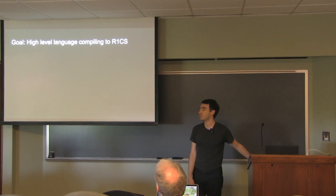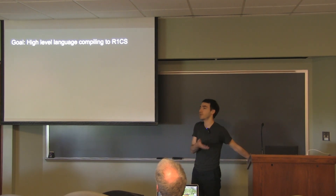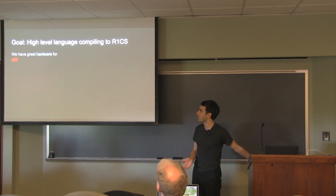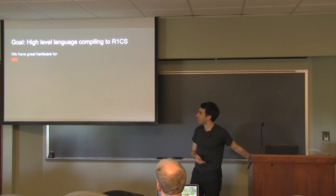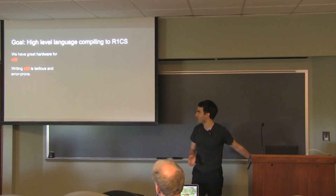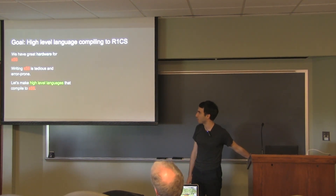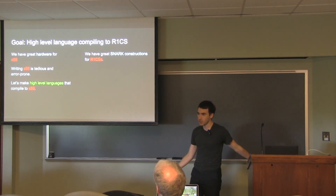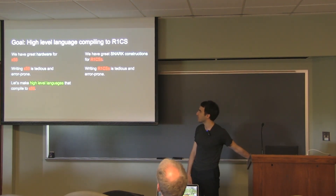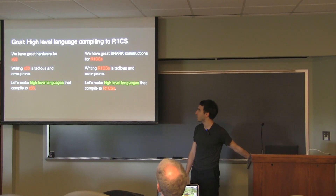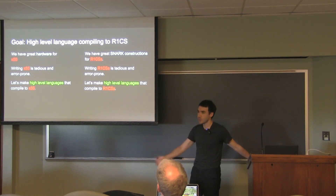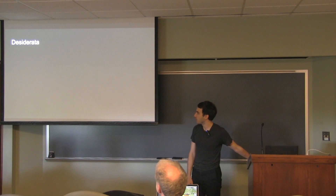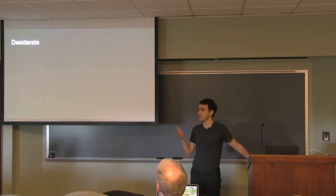Our goal should be, just as in regular programming: a high-level language which compiles to our machine model — rank-one constraint systems. Just as with x86: writing x86 is tedious and error-prone, we want high-level languages that compile to x86. Similarly, we have these great SNARK constructions that work for R1CSs, writing R1CSs is tedious and error-prone, so we should make high-level languages that compile to R1CSs.